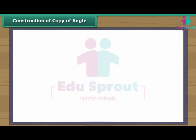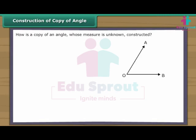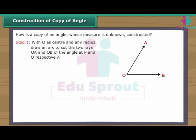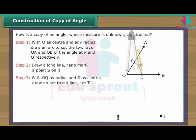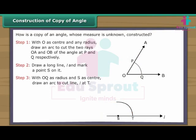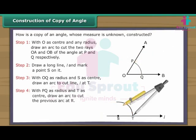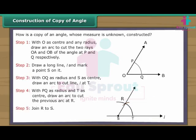Construction of copy of angle. How do we construct a copy of an angle whose measure is unknown? Angle AOB is given. With O as centre and any radius, draw an arc to cut the two rays OA and OB of the angle at P and Q respectively. Draw a long line L and mark a point S on it. With OQ as radius and S as centre, draw an arc to cut line L at T. With PQ as radius and T as centre, draw an arc to cut the previous arc at R. Join R to S. Angle RST is equal to angle AOB.